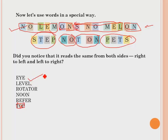Similarly, individual words like E-Y-E (eye), L-E-V-E-L (level), R-O-T-A-T-O-R (rotator), and N-O-O-N (noon) all read the same forwards and backwards. You can make many such special numbers, words, or sentences — it is very interesting!